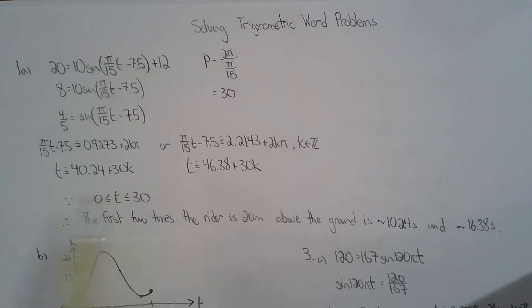I solve for the infinite moments where the rider is 20 meters above the ground but they're looking for the first two times the rider is 20 meters above the ground. So that's basically looking at the first cycle. So we're looking at about 10.24 seconds and about 6.38 seconds.